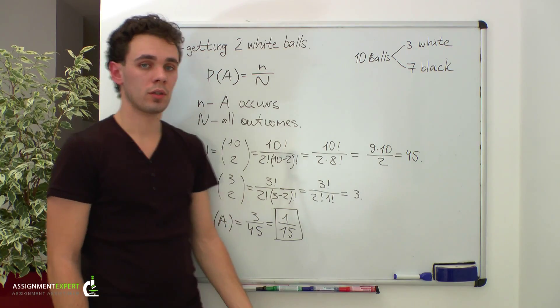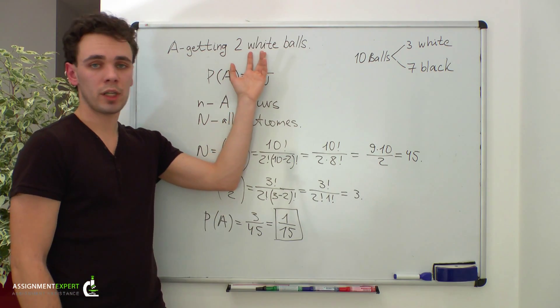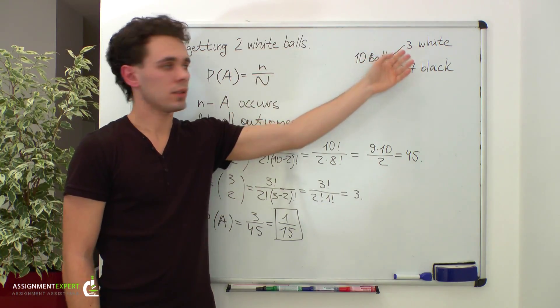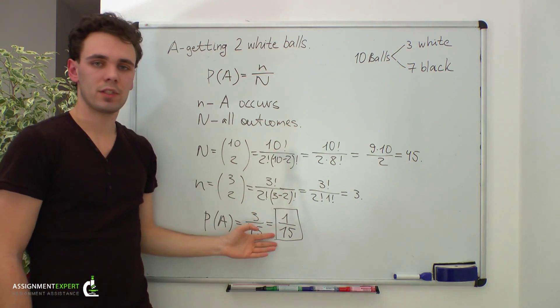So, the answer is as follows: The probability of getting two white balls out of three white and seven black balls in the urn is one fifteenth.